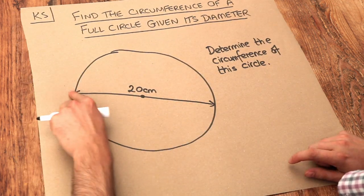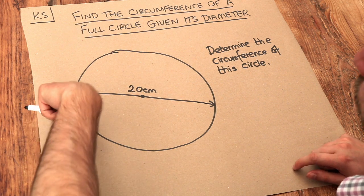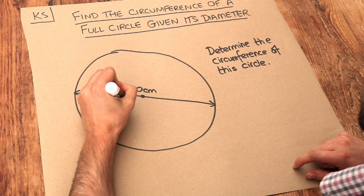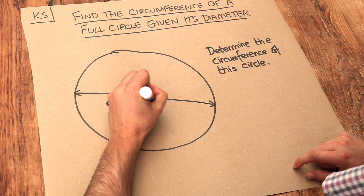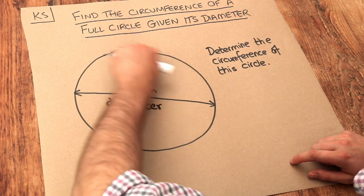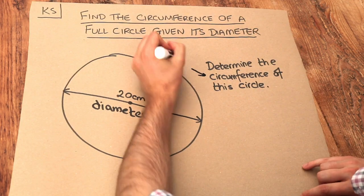Now just as a reminder, the diameter of a circle is the distance from one end of the circle to the other passing through the center. So that whole distance there, that whole length, is known as the diameter. And the circumference is basically the perimeter of the circle.